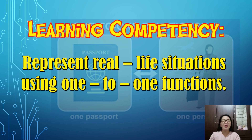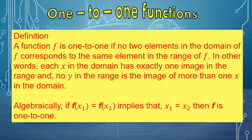In this lesson, we will be able to represent real-life situations using one-to-one functions. A function f is one-to-one if no two elements in the domain of f corresponds to the same element in the range of f. In other words, each x in the domain has exactly one image in the range, and no y in the range is the image of more than one x in the domain. Meaning, there should be no repeated values of x and no repeated values of y. Algebraically, if f(x₁) = f(x₂) implies that x₁ = x₂, then f is one-to-one.